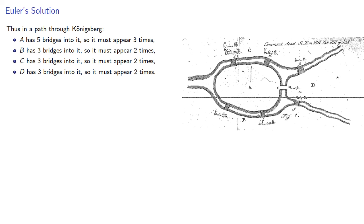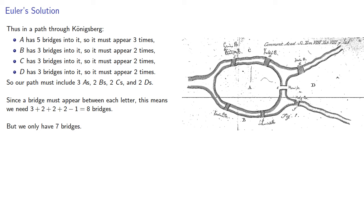And so our path must include three A's, two B's, two C's, and two D's. Since a bridge must appear between each letter, this means we need eight bridges, but we only have seven bridges, so it's not possible to cross all bridges exactly once.